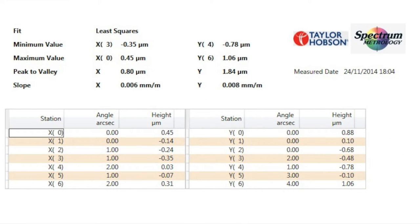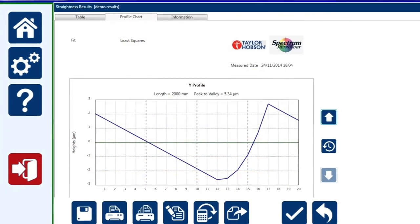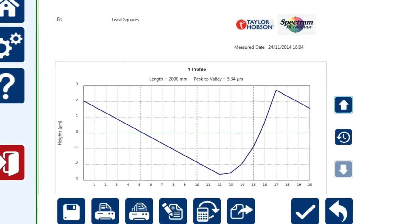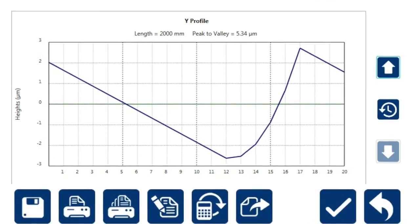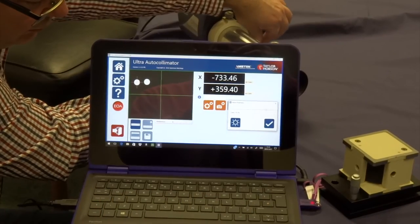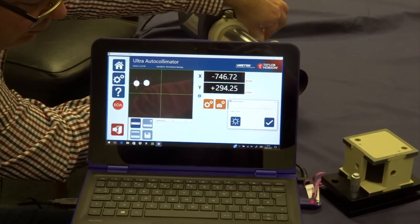For some rough calculations, one arc second is approximately equal to five microns per meter. So if line one was five microns per meter and line two 15 microns per meter, then the difference would be 10 microns per meter, which is two seconds.